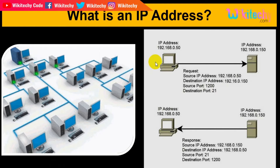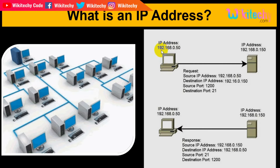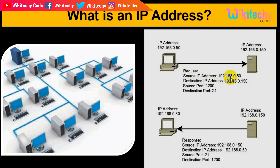Each computer in the network will have an IP address. You are able to see it here — a request from the source IP address. The IP address will have four numbers, it is sent to the destination. The source IP address is 192.168.0.50 and the destination IP address is 192.168.0.